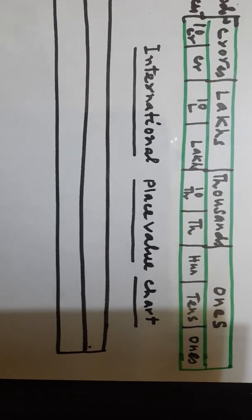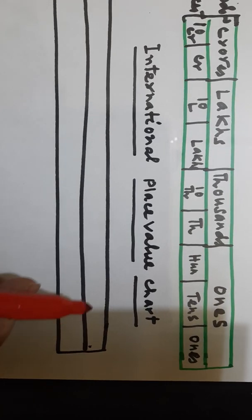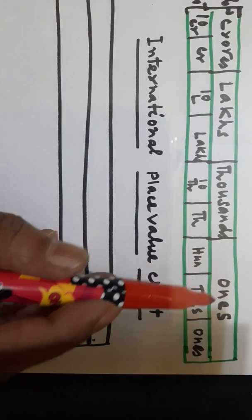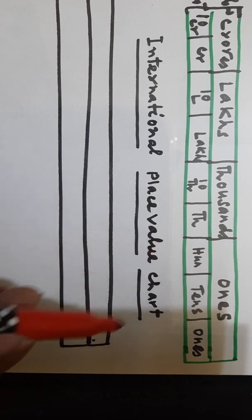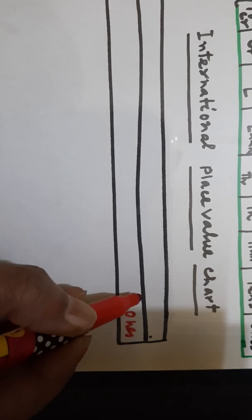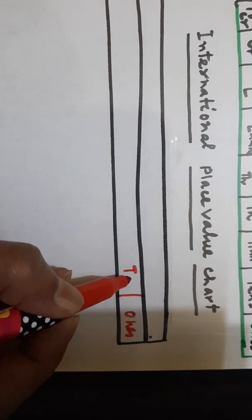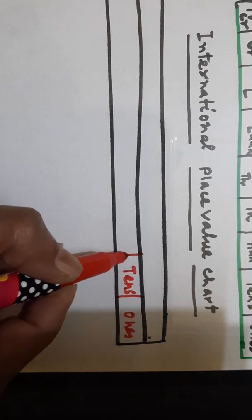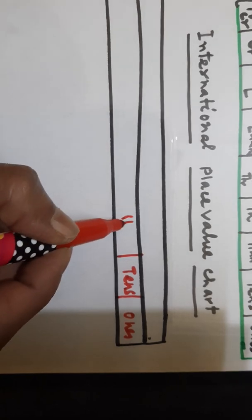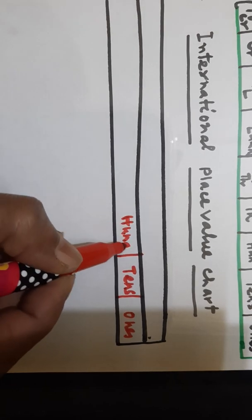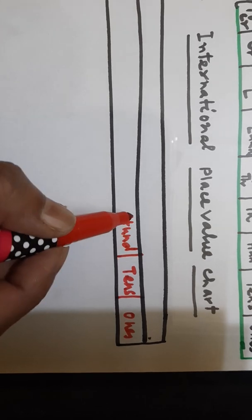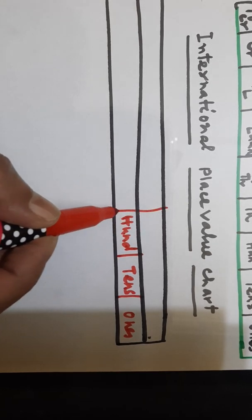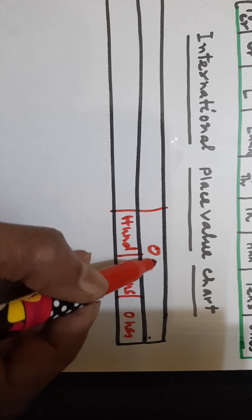In the international place value chart, just like in the Indian system of numeration, in the ones period there are three places: ones, tens, and hundreds. These three places are in the ones period.